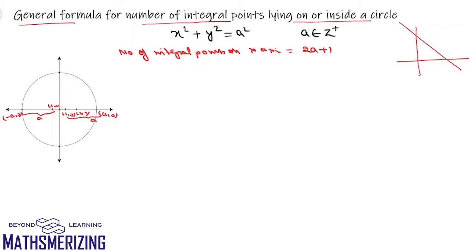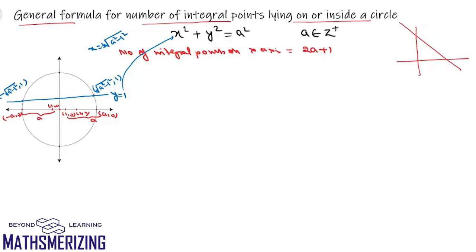Now I'll find the number of integral points on the line y = 1. Putting y = 1 into the circle equation gives x = ±√(a² - 1²). So the points of intersection are (√(a²-1), 1) and (-√(a²-1), 1). I need to count all integral points which lie on the right-hand side of the y-axis and on or inside the circle, starting from (1, 1). I'll include a point if its x-coordinate is an integer, or else the integer just inside the circle.